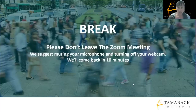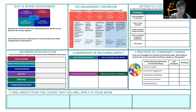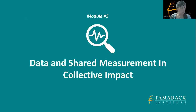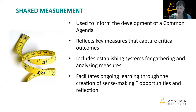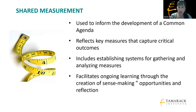Let's talk about data and shared measurement, which is the second of the five conditions of collective impact. Just a quick reminder — let's start at the very beginning with regrounding: how does shared measurement get defined in the context of collective impact? Data is used to help inform your common agenda at the beginning, and then it's also used as key measures that you all agree to in order to track your progress related to that common agenda.